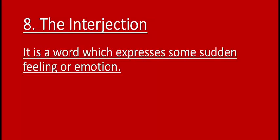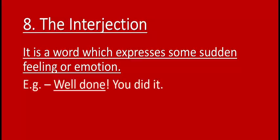The last is the interjection. What is interjection? It is a word which expresses some sudden feeling or emotion. For example: Well done, you did it! Well done is a sudden feeling — what we call an interjection. Second example: Alas, she is dead. The word alas indicates a sad situation. One more thing — an exclamatory mark is always placed after an interjection.